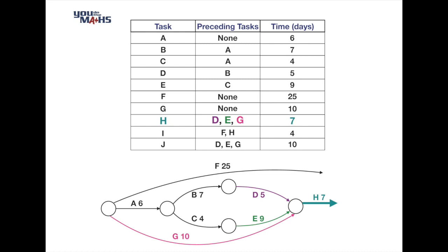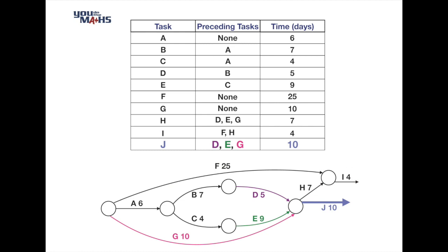Task I has preceding tasks F and H, so we finish those arrows at a circle marking the commencement of task I. Our final task, task J, has preceding tasks D, E, and G - the same as H - so it comes off the same circle where H started. Because there are no more tasks, task I and J both go to the final circle which is the conclusion of the project network.